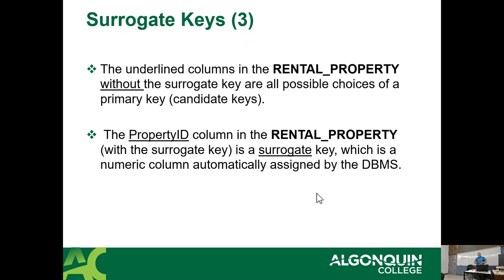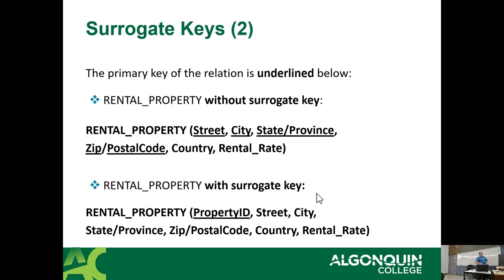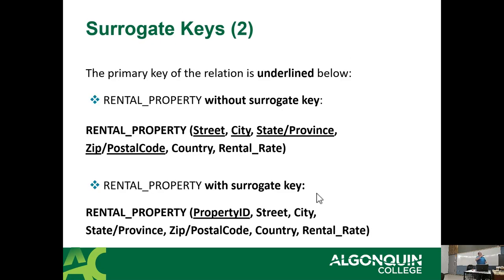In the first rental property example without the surrogate key, everything underlined is the candidate key — it uses four different attributes to uniquely identify something, making it composite. Once we added the surrogate key, the property ID became it and it's now a single primary key. A composite key is a key that consists of two or more columns used as a primary key.